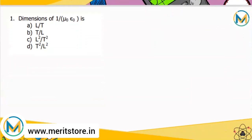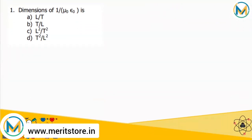The first question asks for the dimensions of 1/(μ₀ε₀), where ε₀ is the electrical permittivity of free space and μ₀ is the magnetic permeability of free space. These are related to the speed of light in vacuum by the formula c = 1/√(μ₀ε₀). Squaring both sides gives c² = 1/(ε₀μ₀), so the dimension of 1/(ε₀μ₀) equals the dimension of c².